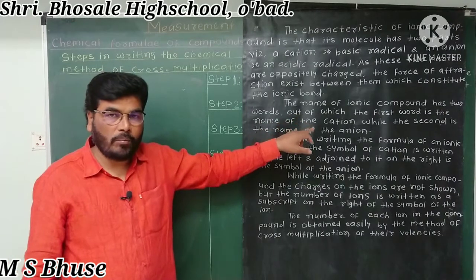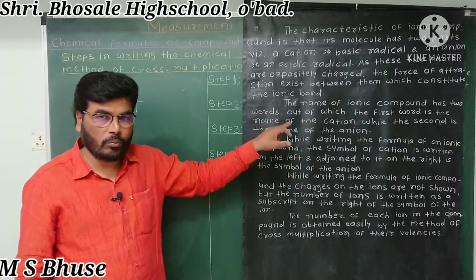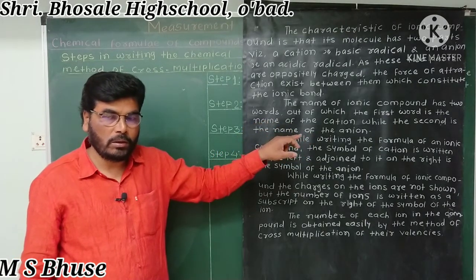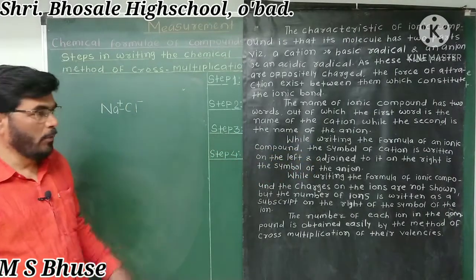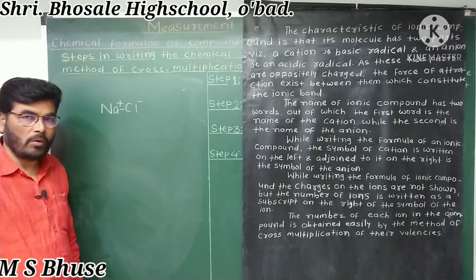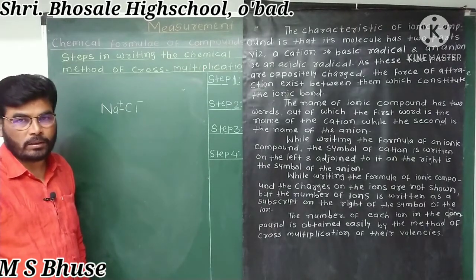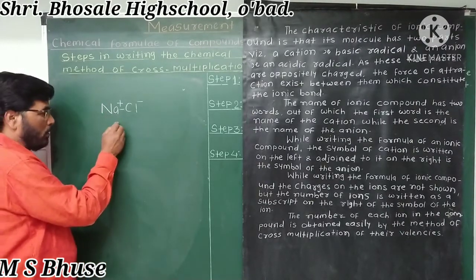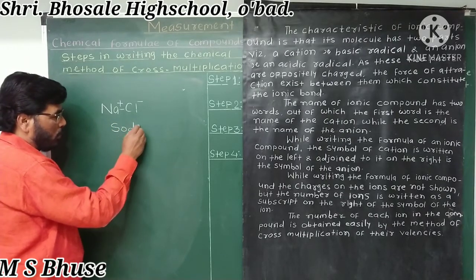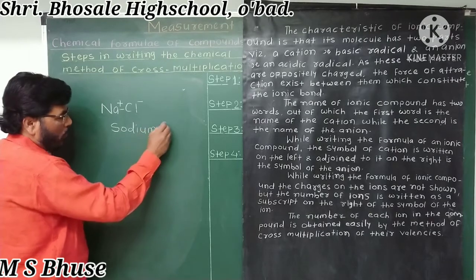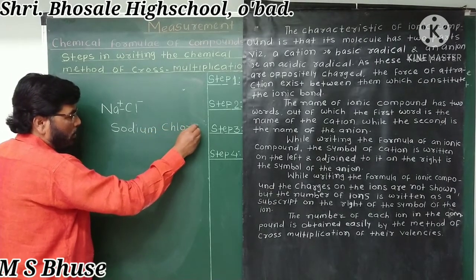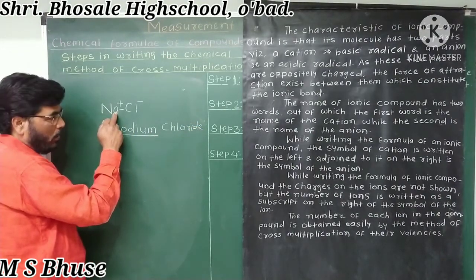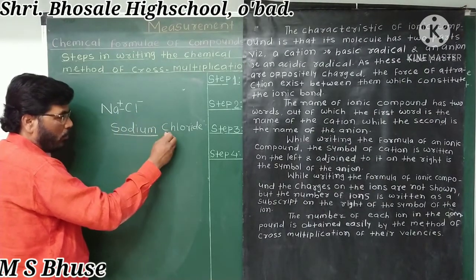The name of an ionic compound has two words: the first word is the name of the cation and the second word is the name of the anion. For example, sodium chloride — the first word 'sodium' is the name of the cation and the second word 'chloride' is the name of the anion.